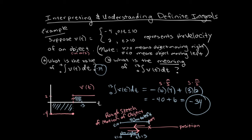So what is the meaning of the definite integral? It's the change in position. The object moved 34 units to the left. That is the meaning of the definite integral in this example.